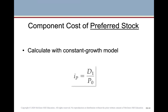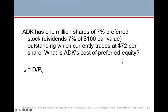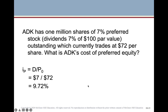To calculate the cost of preferred stock for ADK, we use the constant growth model with g = 0: cost of preferred = D1 / P0. ADK has 1 million shares of 7% preferred stock, meaning on every $100 of value there's a $7 dividend, and the preferred stock is currently trading at $72 per share. So the cost of preferred equity = $7 / $72 = 9.72%.